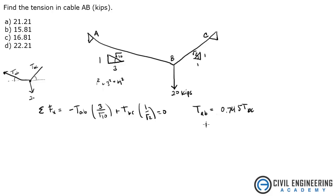Or you could write this as tension BC equals tension AB divided by 0.745. I just manipulated that.